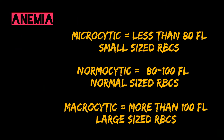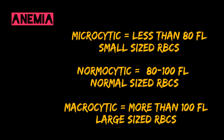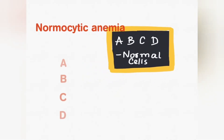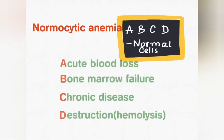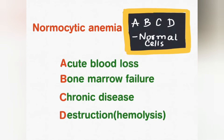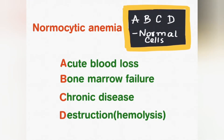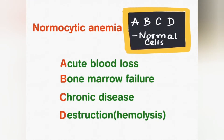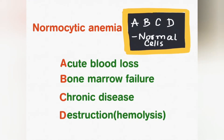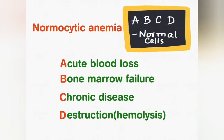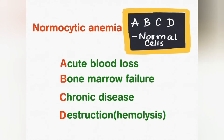Now let us look at the various causes of these types of anemia, starting with normal sized cells. Normocytic anemia has causes as simple as ABCD: acute blood loss, bone marrow failure, chronic disease, and destruction or hemolysis.